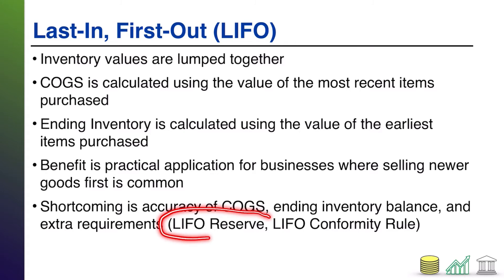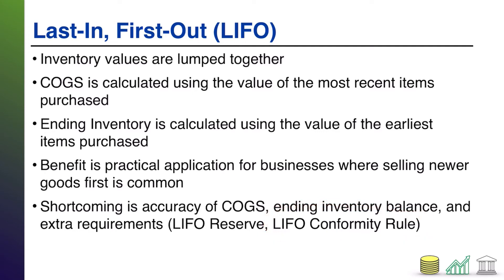There are also a couple of extra requirements that go into using a last in first out system. You've got to disclose to investors something called the LIFO reserve, which is a way of saying: if we had used a different method — specifically first in first out — here's what our inventory would have been valued at. You also have the LIFO conformity rule, which means whatever you're doing for financial purposes you've also got to mimic for tax purposes. So there's some extra regulation around using LIFO, but it is an option companies have should it make sense for them.